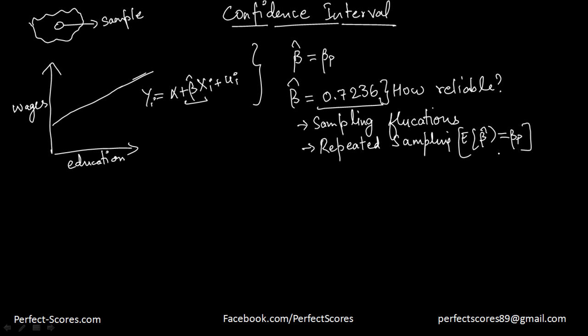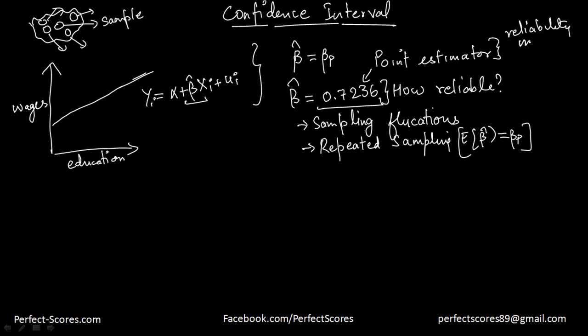We need to take a lot of samples. The more samples we take, the closer we get to the actual value of the population parameter. So how do we measure reliability? This is actually a point estimator — we are giving you the exact value. The reliability of a point estimator is measured by standard error, which we covered in the previous video. Instead of relying on the point estimate, what we can do is construct an interval.